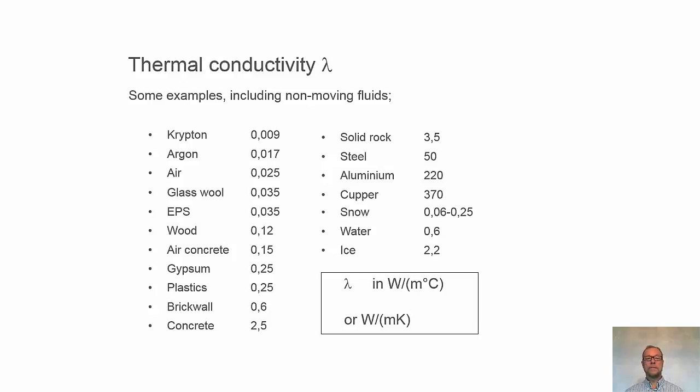We have thermal insulation materials, glass wool and EPS. Expanded polystyrene is 0.035, rather close to air. Wood, almost four times greater than the mineral wool, for instance. Air concrete, even a bit higher, and then different types of materials.